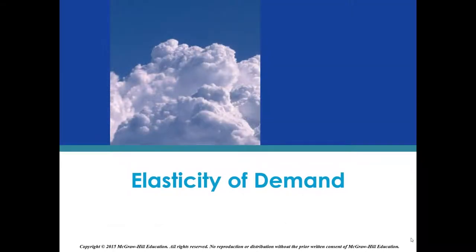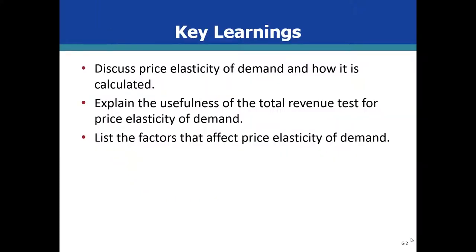In the chapter on supply and demand, we talked a lot about curves. As you will recall, the demand curve had not only a downward slope, but the slope was not consistent over the whole curve. This means that a change in price did not always change the quantity demanded in the same way. In this section, we will explore the price elasticity of demand and how to calculate it. The concept of using the total revenue test is also introduced as an easier way to explain elasticity to marketing and brand managers. Finally, the factors influencing the elasticity of demand are also outlined.